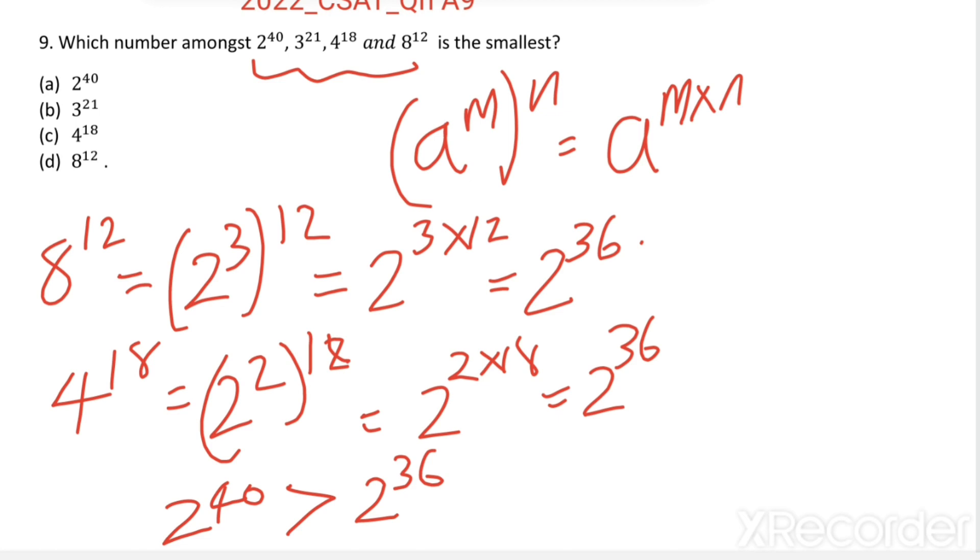Option c and d are equal, so they can't be our answer. And option a is greater than c and d, so that is also not the smallest. Then the smallest amongst these four is 3 power 21. Option b is the right answer.